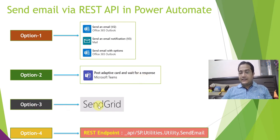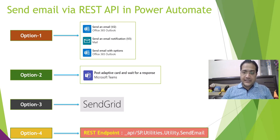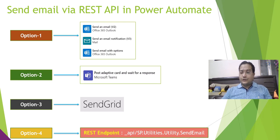Option three is SendGrid. SendGrid is an email service which can be used in Power Automate as well. There are particular actions available for SendGrid in Power Automate which you need to enable. That is also one of the options.